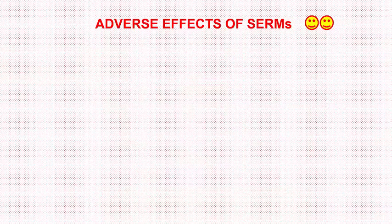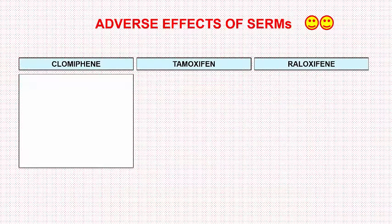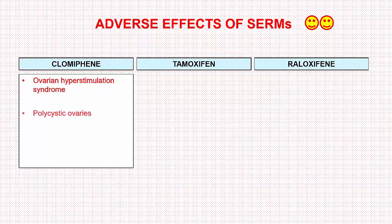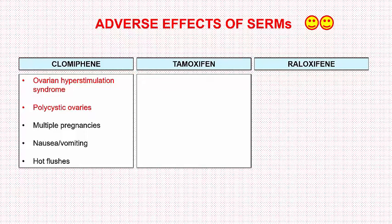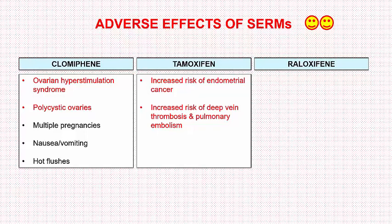Now moving to the adverse effects of SERMs. Clomiphene, because it causes ovarian stimulation, has the potential to cause ovarian hyperstimulation syndrome, polycystic ovaries, and multiple pregnancies. It may also cause nausea, vomiting, and hot flashes. Tamoxifen increases endometrial proliferation, therefore there is an increased risk of endometrial cancer. There is also an increased risk of deep venous thrombosis and pulmonary embolism, as well as nausea, vomiting, and hot flashes.